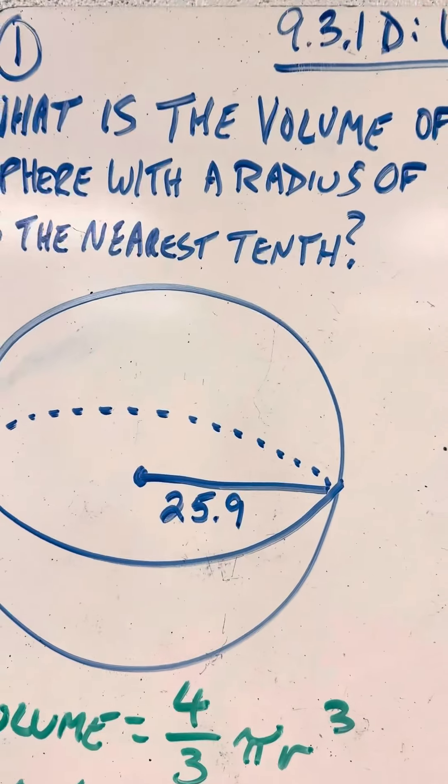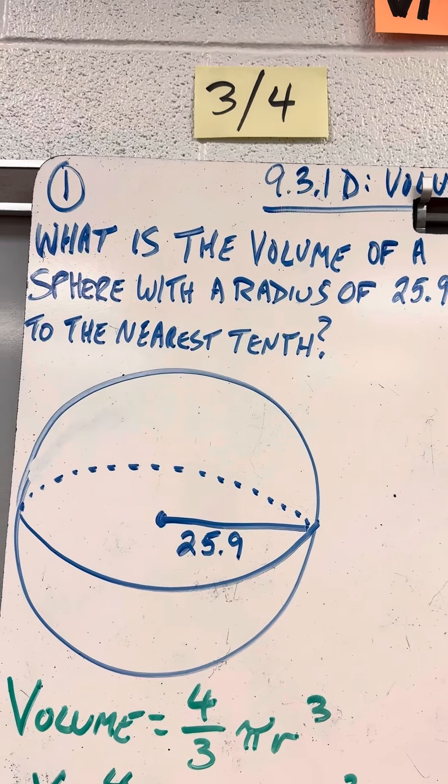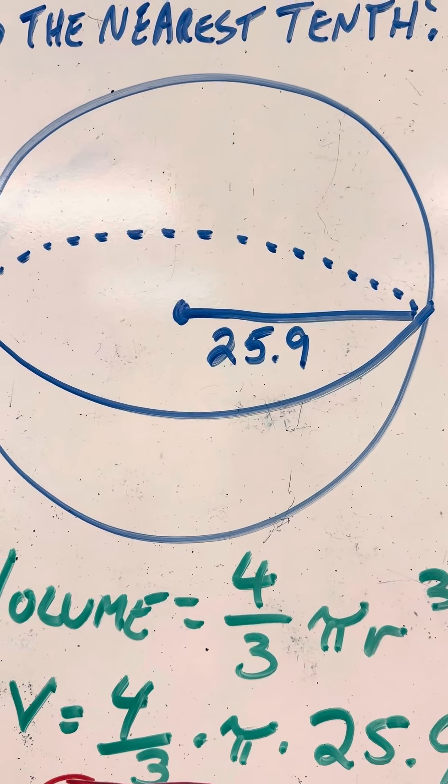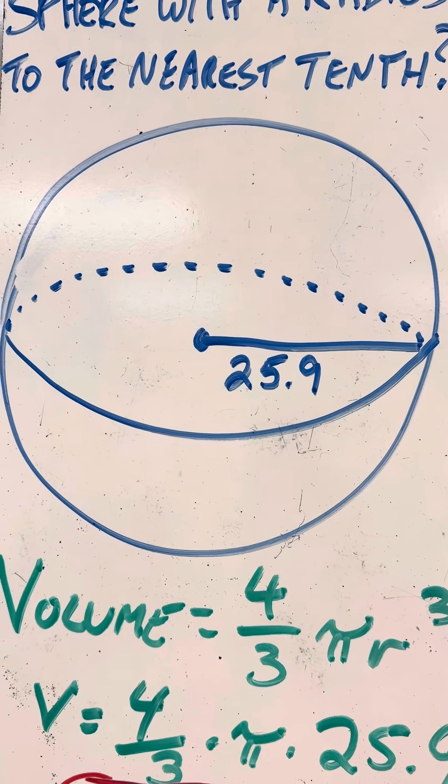What's the volume of a sphere with a radius of 25.9? Well, volume equals 4 thirds pi r cubed. 4 thirds pi times r to the third power.